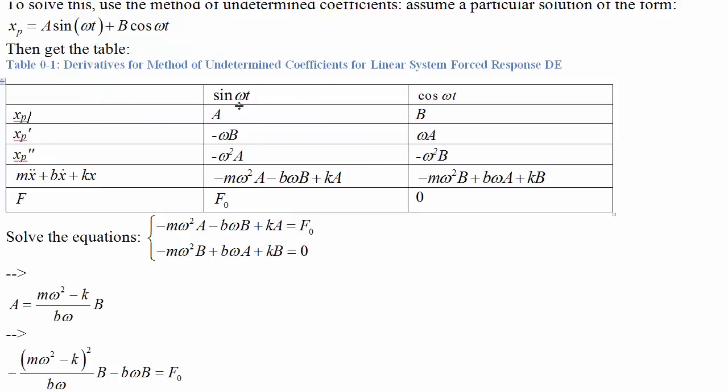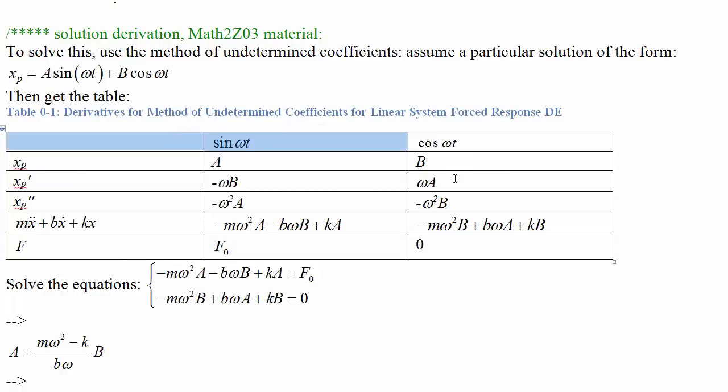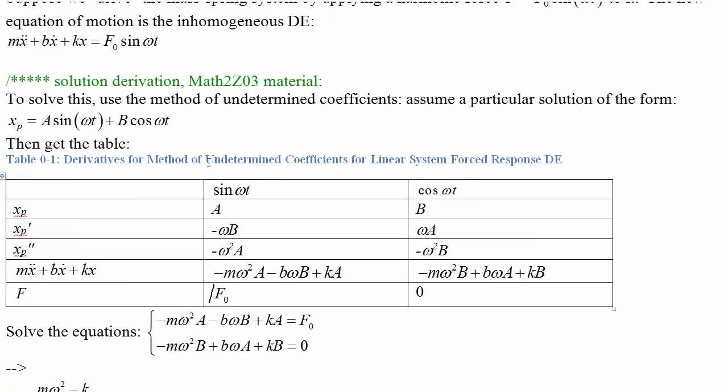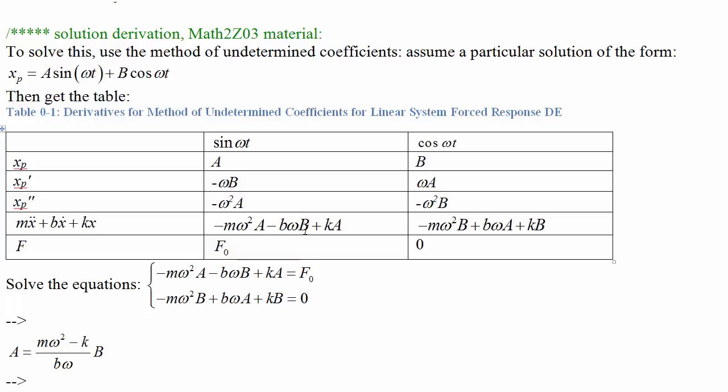I like to make a table whenever I do method of undetermined coefficients. The xp is A sin ωt plus B cos ωt. Then xp prime would be -ωB sin ωt + ωA cos ωt. xp double prime is -ω²A sin ωt - ω²B cos ωt. Then you can add up the different terms when you substitute in xp by adding the things in the rows above. We get two equations on the left side of the DE equal to the right side of the DE.